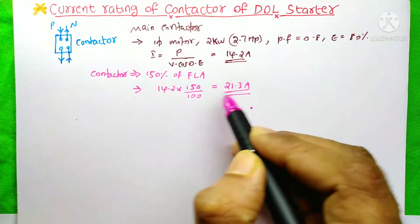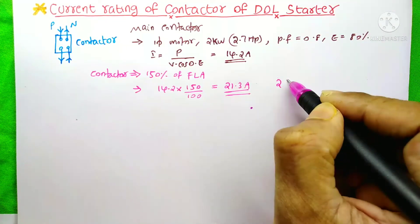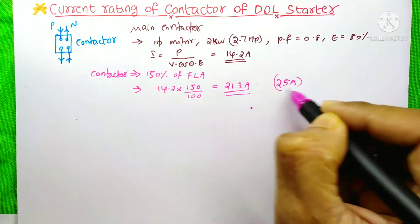In the market you will not get this size, so you need to choose the next higher size. So you have to select a 25A conductor.